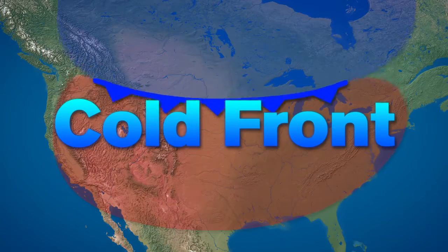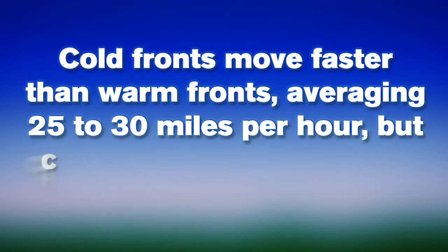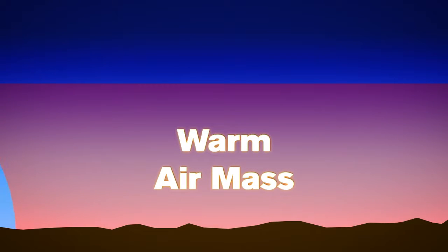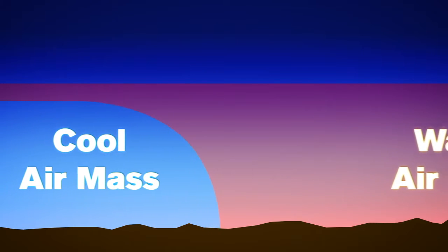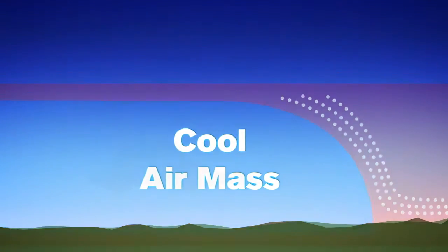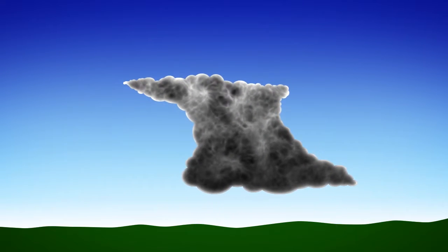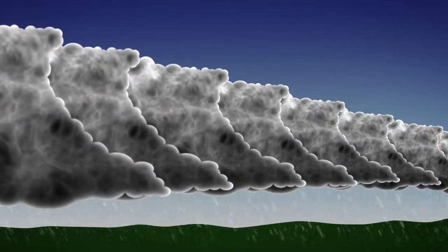A cold front occurs when cold, dense air overtakes warmer air. Cold fronts move faster than warm fronts, averaging 25 to 30 miles per hour, but can go as fast as 60 miles per hour. Cold fronts stay close to the ground and have a steeper angle than a warm front, and will move across the ground and lift existing air at a very rapid rate. This rapid upward motion will cool the air and form cumulus clouds, which could eventually develop into thunderstorms or even form a line of thunderstorms called a squall line. Once the front passes, the weather will clear and improve with general wind flow from the west-northwest.